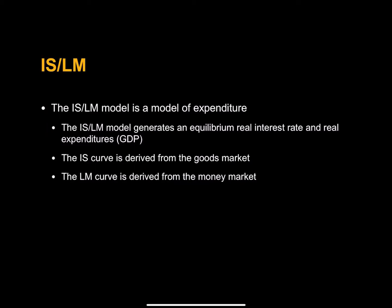The IS curve is half of the ISLM model. The ISLM model is a model of expenditure where we get an equilibrium real interest rate and an equilibrium real expenditure or real GDP. We derive the IS curve from the goods market. The LM curve, the other half of this model, is derived from the money market. But today, we are going to talk about just IS.